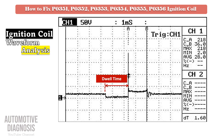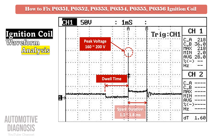Dwell time is when the control line is connected and the primary coil is creating a magnetic field. Peak voltage is the increased voltage on the primary coil after collapsing the magnetic field. Spark duration is the time that the spark is happening.